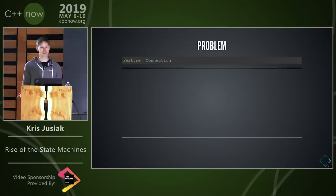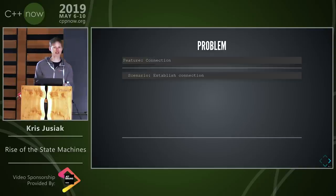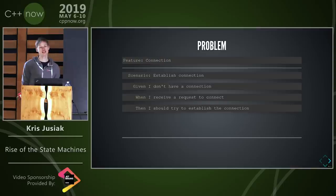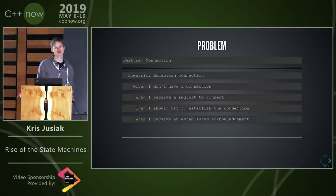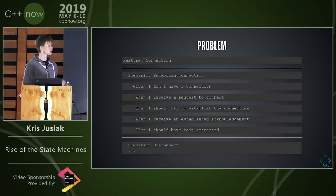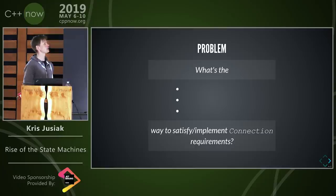Let's say a product owner comes to us and gives us requirements. From a behavior-driven development / acceptance-criteria perspective, we have a scenario: given I don't have a connection, when I receive a request to connect, I should try to establish the connection, and when I receive the acknowledgement I should have been connected. Very easy, right? And we get other features too — disconnect, reconnect, and so on.